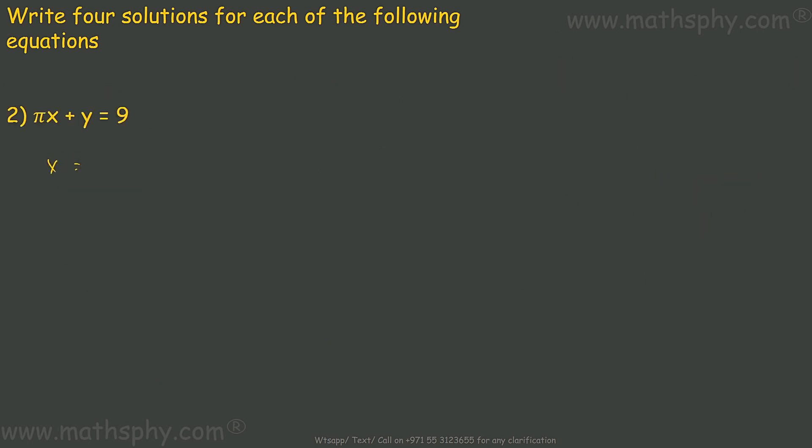let's take x as 0, x as 1, x as 2, x as 4. Now, pi x plus y equals to 9 can be written as y equals to 9 minus pi x. When x is 0, 9 minus pi into 0 is 0, comes to 9. The first solution would be x is 0, y is 9.